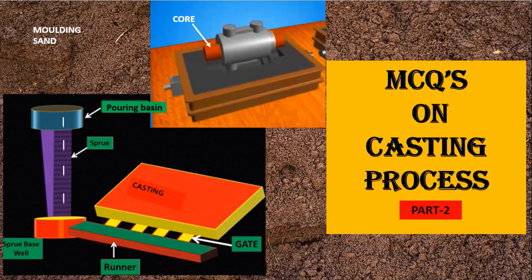Hello friends, today we'll discuss MCQs on casting process part 2, in which I will cover the topics: types of molding sand, sand molding methods, types of core and core prints, gating systems, and types of gates. All these MCQs will be explained with the help of diagrams and videos.